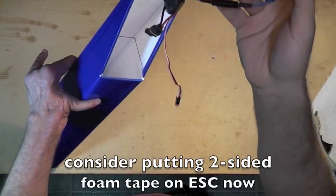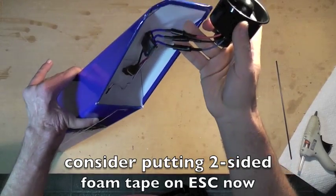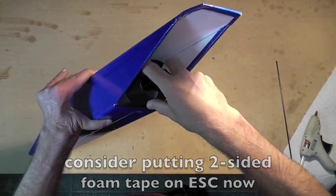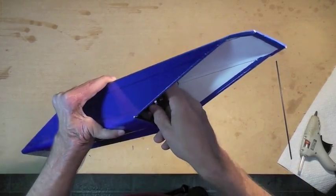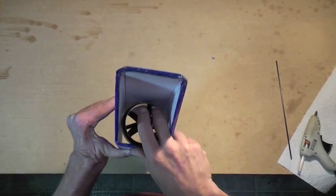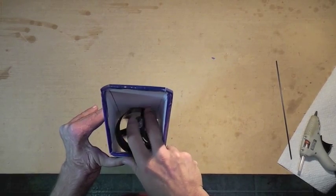So take your speed control, put that in first. Drop in the wires, turn the ducted fan, and slide it into place. Like that. Give it a little spin, make sure it's not binding.